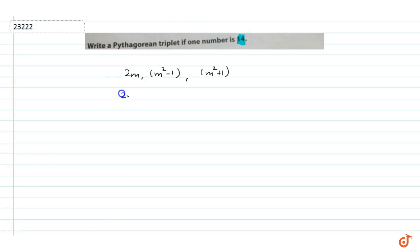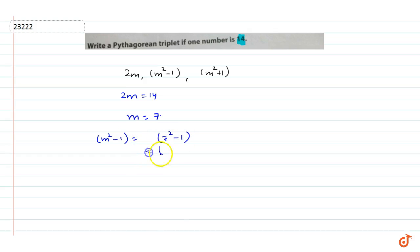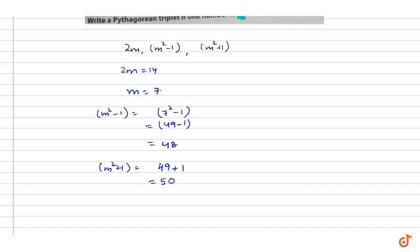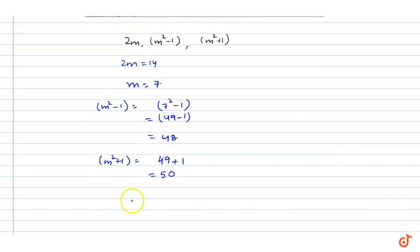Let us assume that 2m equals 14, so m equals 7. Then m²−1 equals 7²−1, that is 49−1, which is 48. And m²+1 equals 49+1, which is 50. So the Pythagorean triplet will be...